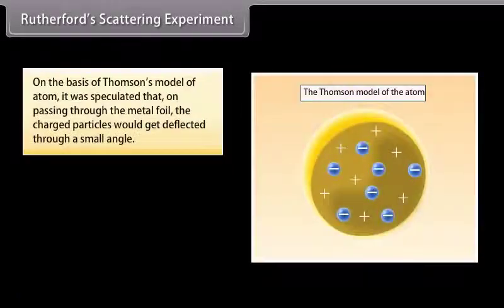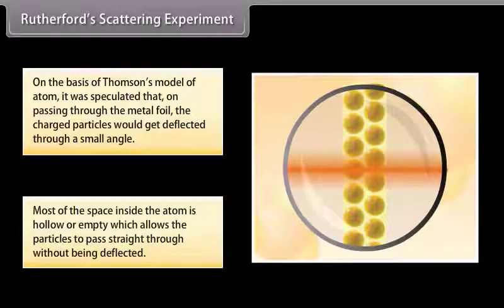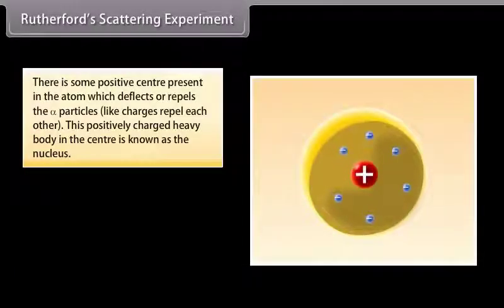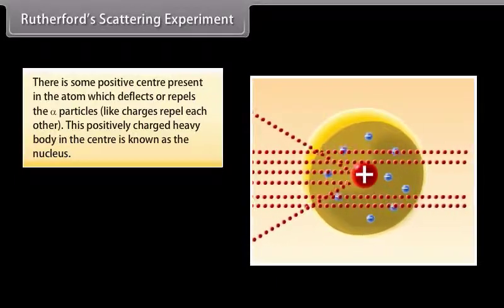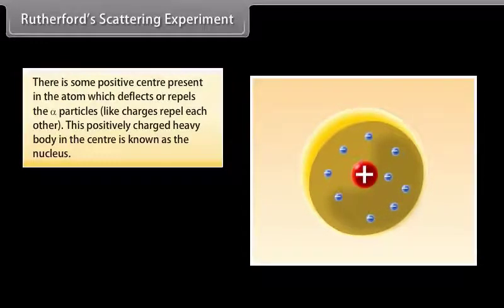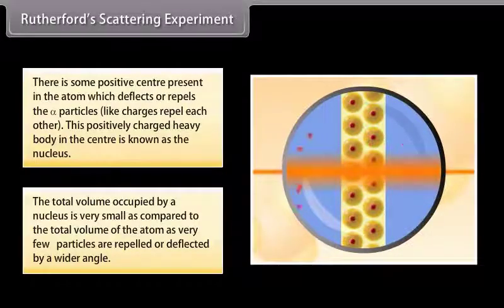On the basis of Thomson's model of atoms, it was speculated that on passing through the metal foil, the charged particles would get deflected through a small angle. Observations showed: 1. Most of the space inside the atom is hollow or empty, allowing particles to pass straight through without deflection. 2. There is some positive center in the atom which deflects or repels the particles, as like charges repel each other. 3. This positively charged heavy body in the center is known as the nucleus. The total volume of the nucleus is very small compared to the total volume of the atom, as very few particles are repelled or deflected by a wider angle.